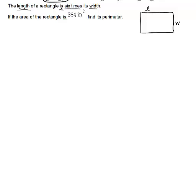And it says that the length is 6 times, so that's multiplication, so it's 6W. But instead of the perimeter, they're giving us the area, so they tell us that the area is 384 inches squared. So remember, my area formula is length times width, so I know that that's 384 equals the length, which is 6W, times the width, which is just W.